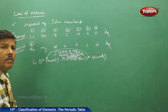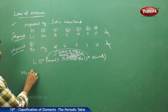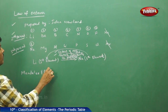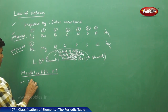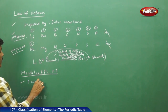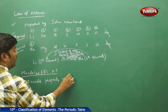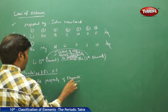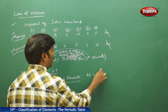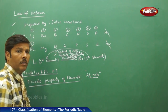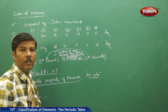Our next discussion is Mendeleev's periodic table. The periodic property of elements is based on atomic weights. As already discussed, the definition of Mendeleev's periodic table states that all the physical and chemical properties of elements are the periodic functions of their atomic weights.